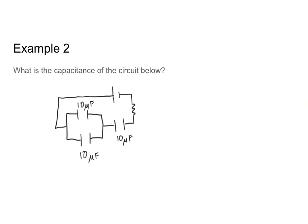Now let's do a slightly more complicated circuit and find the capacitance of the circuit below. In this circuit, we have a piece that is in parallel, and then that whole parallel component is in series with another capacitor. As with resistors, we want to start by breaking down the smallest component of our circuit before working up to the circuit as a whole. When you have a complex circuit, you want to start with the smallest possible piece — the part least likely to affect other pieces of the circuit.